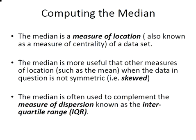Now the median is more useful than other measures of location, one of which is the mean, when the data set is not symmetric. So when we have a skewed data set we would use the median. If we had a symmetric data set we would use the mean.